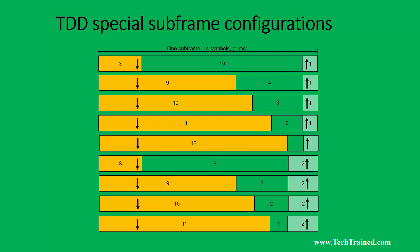You should understand the differences between TDD and FDD radio frames. Based on those differences, throughput computations are different for time division duplexing — there is actually slightly less throughput in TDD because of the way subframes are arranged and how OFDM symbols are arranged in the special subframes. These structural differences always lead to a deviation in throughput.